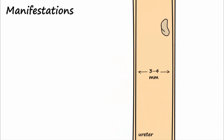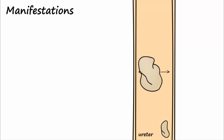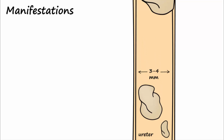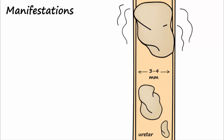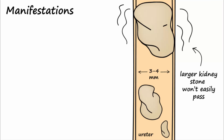The ureters are three to four millimeters in diameter. If the stone is, for example, five millimeters, it won't easily pass down the ureter, and will elicit the characteristic painful renal colic as it irritates the ureter, especially during intermittent ureter peristaltic movements.